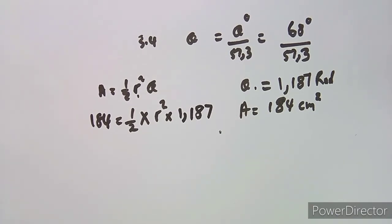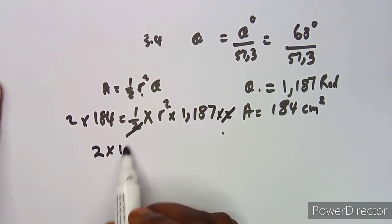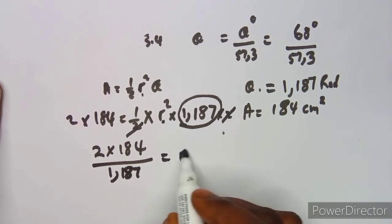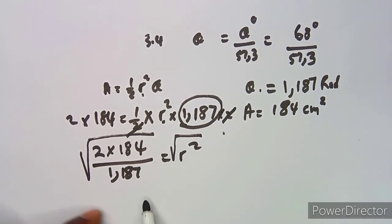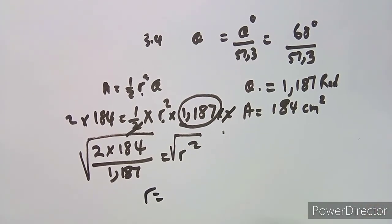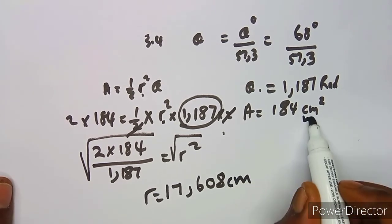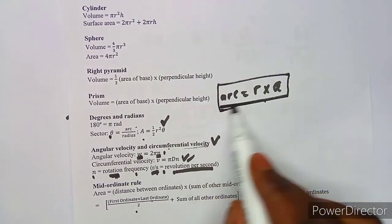Dividing both sides by 1.187 gives r² = 368 / 1.187. Taking the square root gives r = 17.608 centimeters. Since the area was in square centimeters, the radius is in centimeters.